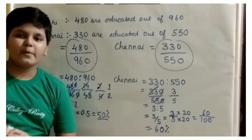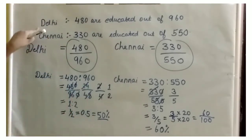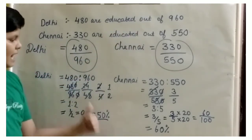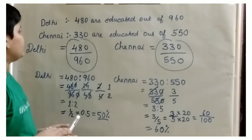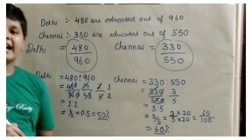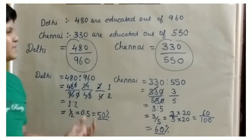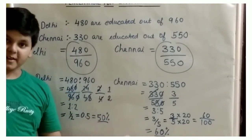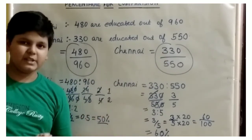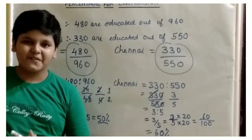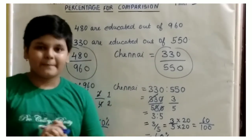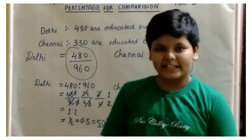Now we can come to our final conclusion: the percentage of educated women in Delhi is 50%, and in Chennai it is 60%. So Chennai wins in education. This is just an example value and not meant to be inaccurate. Thank you for watching — please like, share, and subscribe to my channel. Press the bell icon and goodbye.